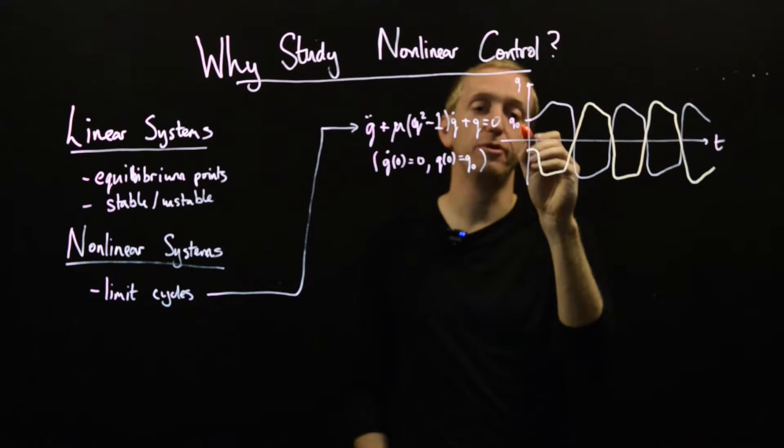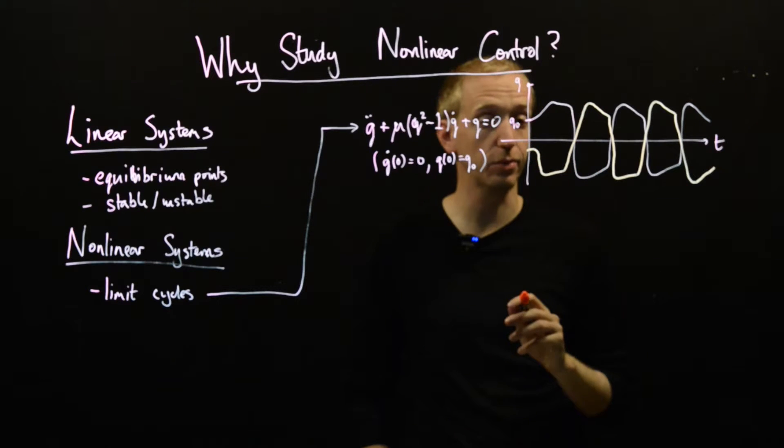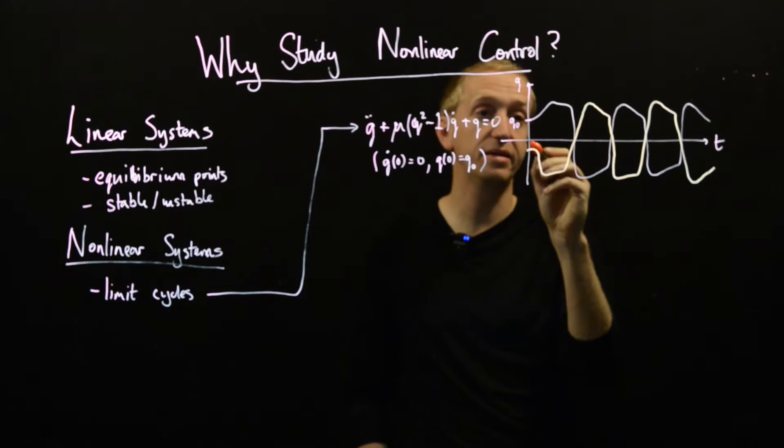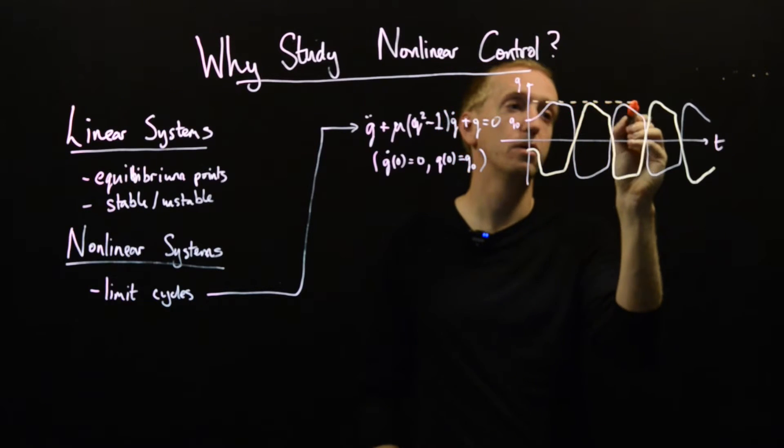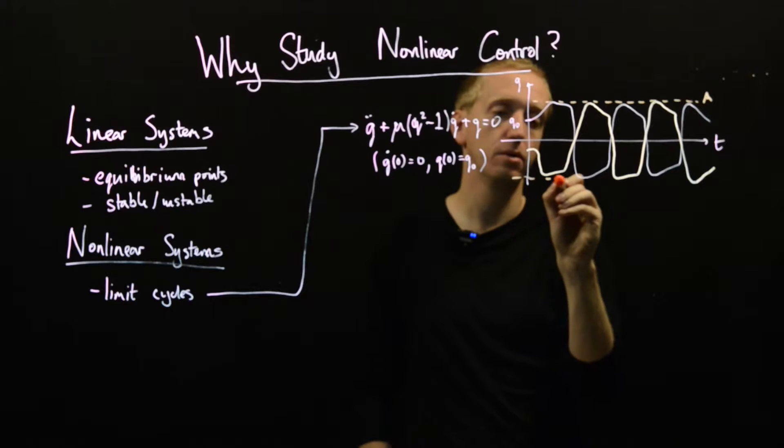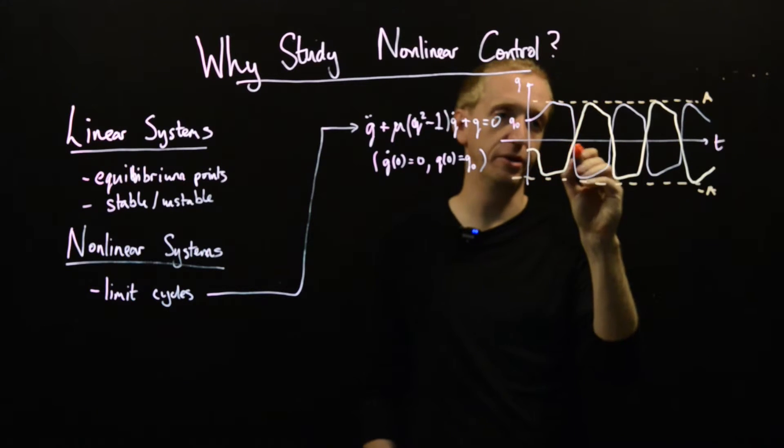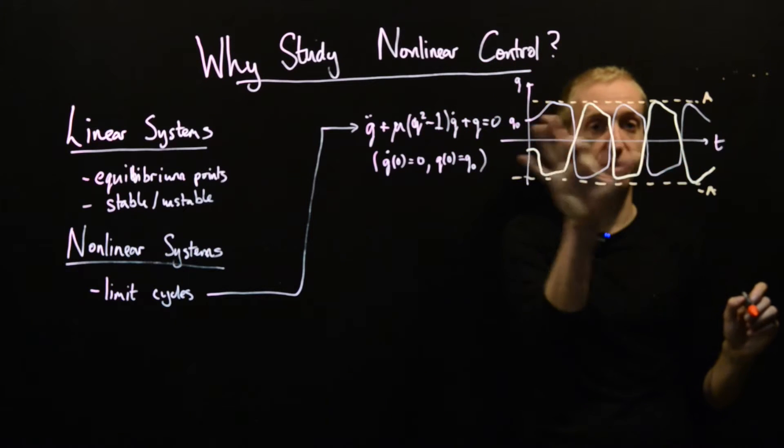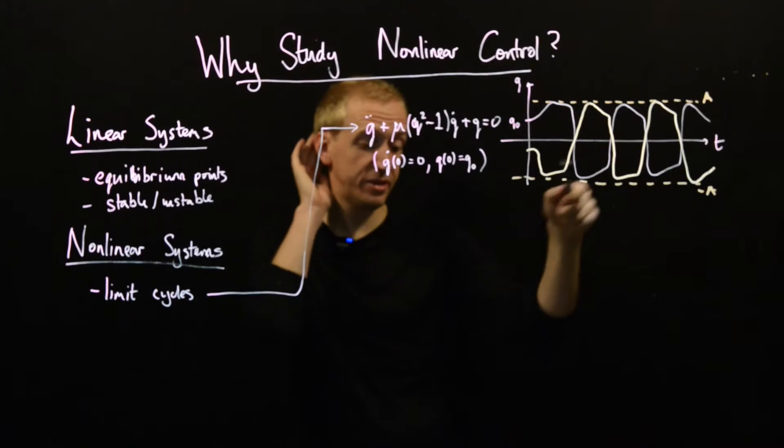And that is that for a set of different initial conditions, in fact for any initial condition this will happen, will tend to this fixed periodic solution where the amplitude remains fixed and the period remains the same. They might be shifted from each other but the period will be the same. And these are the characteristics of a limit cycle.